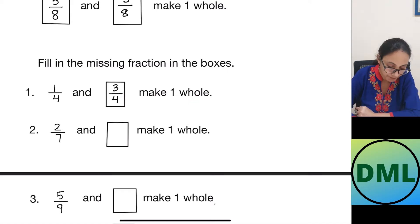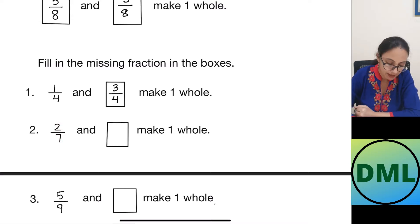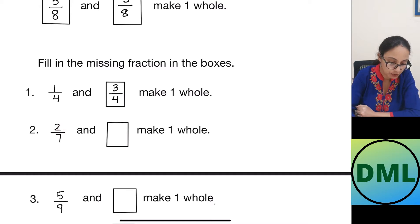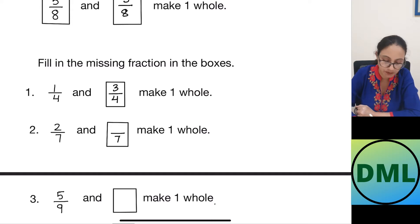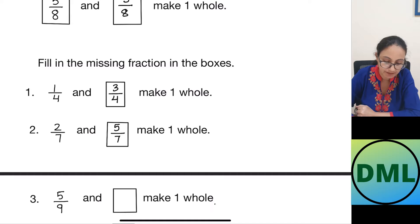Now let's see one more example. 2 by 7 and dash make 1 whole. So 2 by 7 means out of 7, 2 parts are shaded. Now how many parts are unshaded? 7 minus 2 means 5 parts are unshaded. So 7 will be in the denominator and 5 in the numerator. That means 2 by 7 and 5 by 7 will make a complete whole.